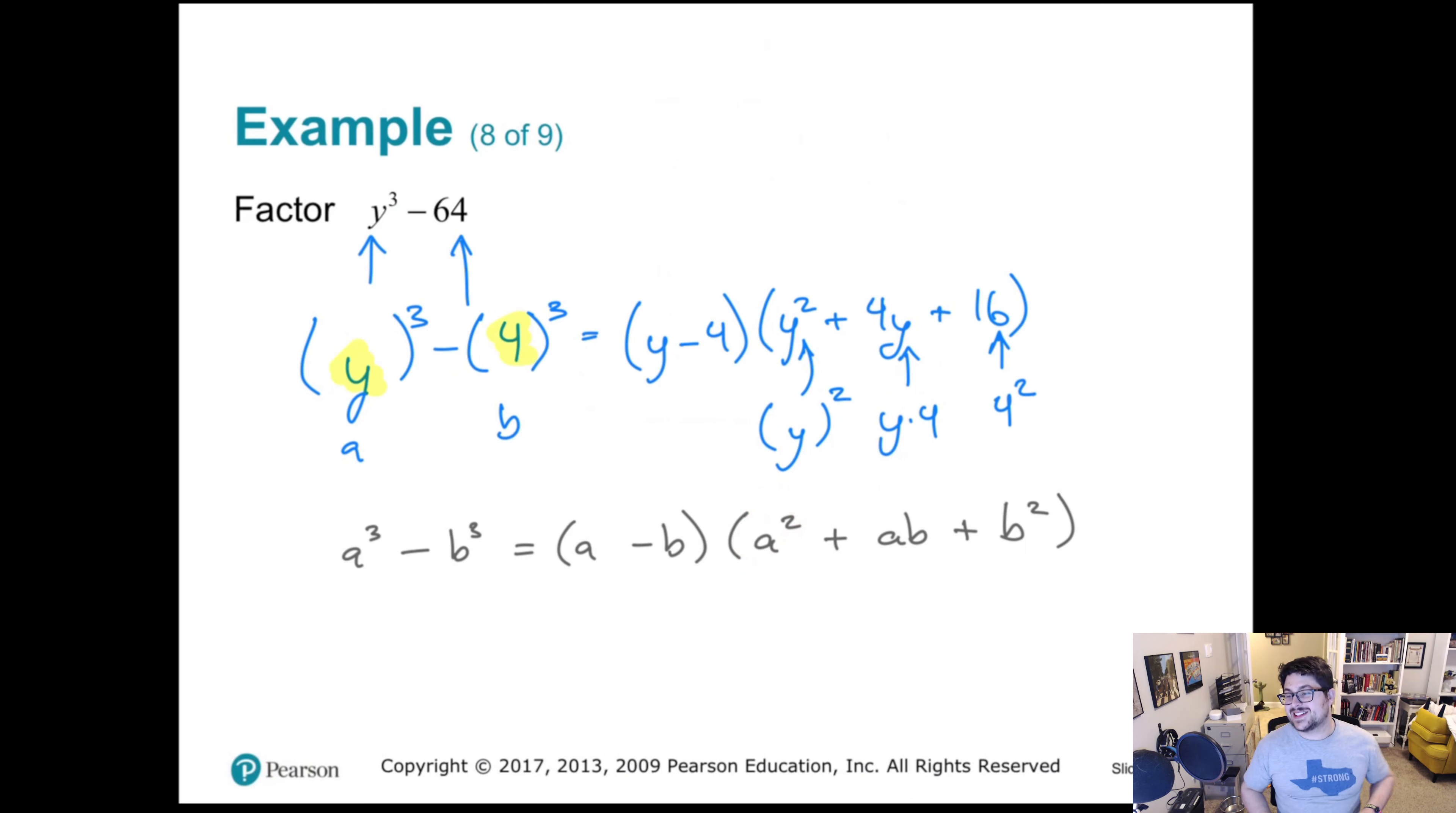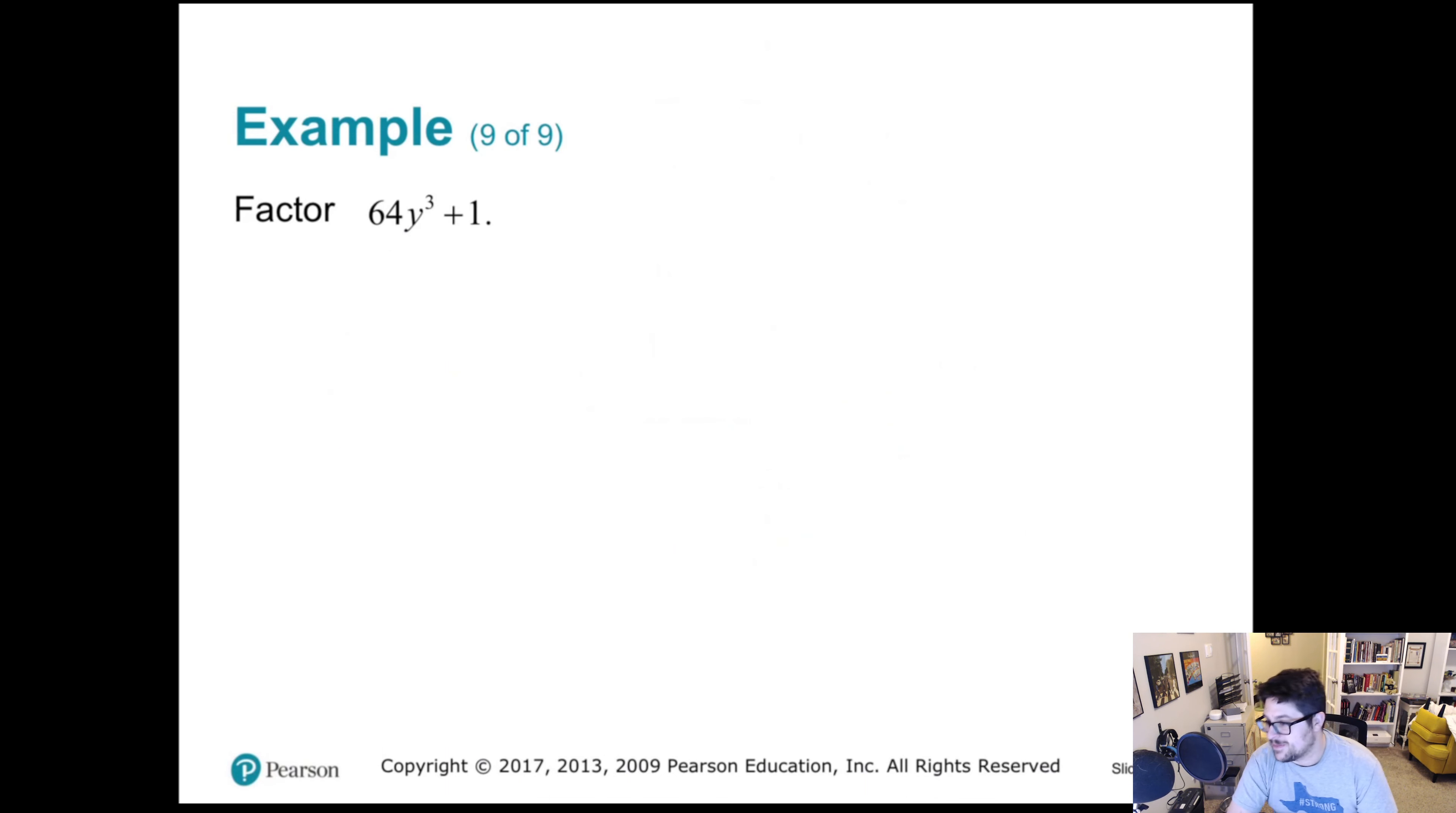All right. Let's get back to it. So let's try one more of these. Let's try this one. So again, we're saying what cubed gives 64y³? Well, 4³ gives 64, and y³ gives y³. And then what cubed gives 1? Well, 1. So 4y is our a, and 1 is our b. Now let's plug this into our formula. Our formula being a³ + b³ equals (a + b) times (a² - ab + b²).